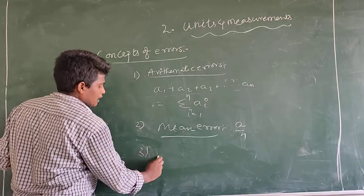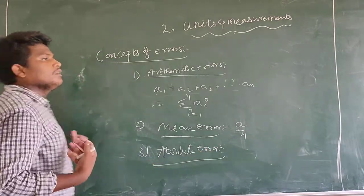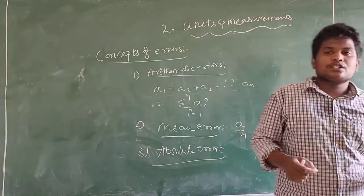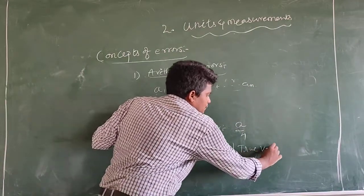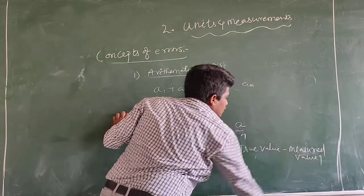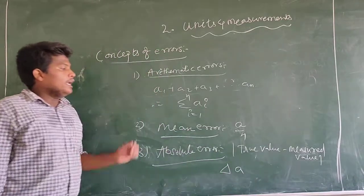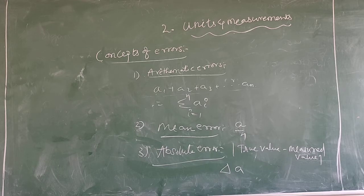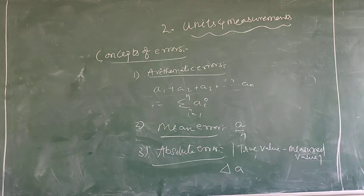Third type of error: absolute error. It will be the absolute error — the difference between the true value and the measured value. Absolute error is the difference in the measured value from the true value.